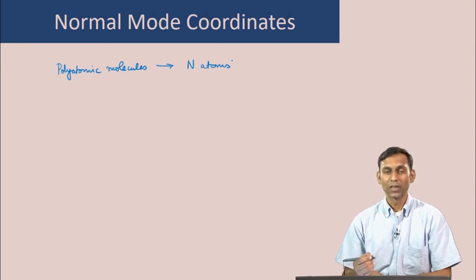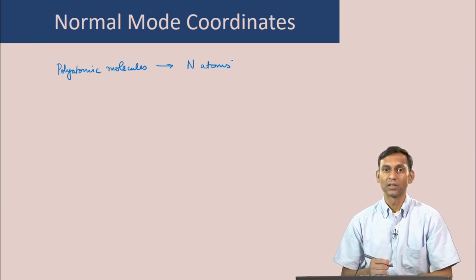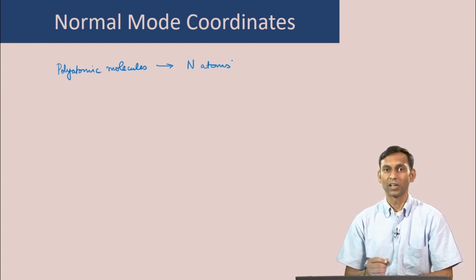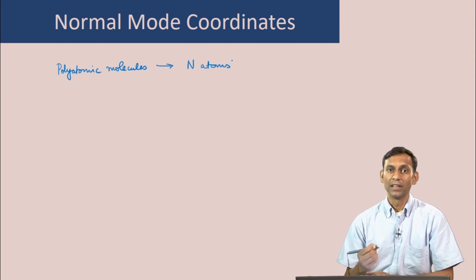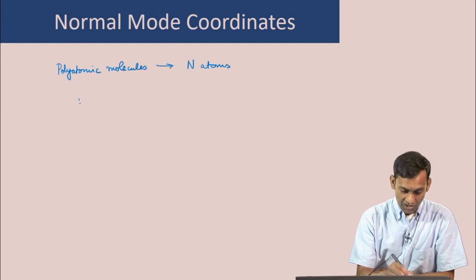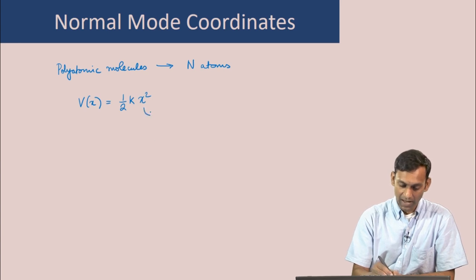In the case of diatomic molecules, that is when there are just 2 atoms, we have seen in a previous lecture that the vibrational motion of the 2 atoms is equivalent to the vibration of a single particle connected with a spring and performing simple harmonic motion. The particle moves with a potential energy which is quadratic in displacement: V(x) = ½kx², where x is the displacement from the equilibrium position.